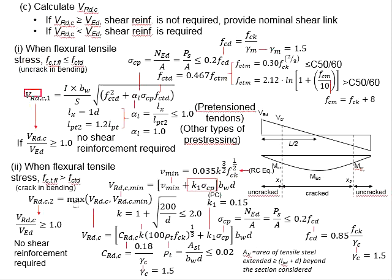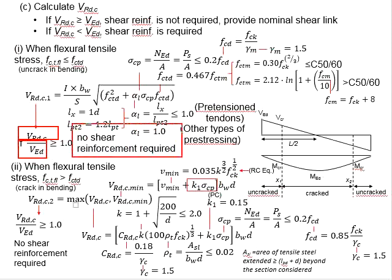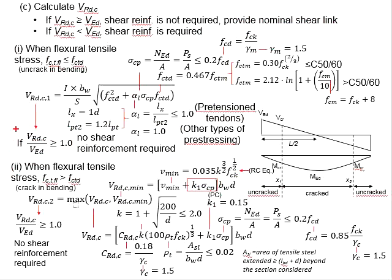Based on the VRdc obtained, it is to be checked against the shear load. If VRdc is greater than the shear load, no shear reinforcement is required and you will just need to provide nominal shear reinforcement. However, if the shear resistance of the concrete is less than the shear load, shear reinforcement will be required.